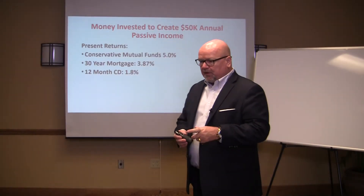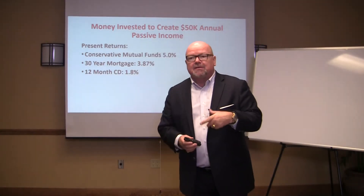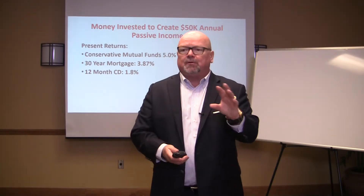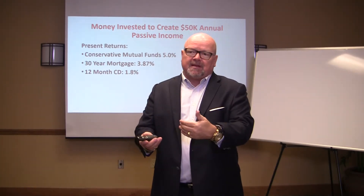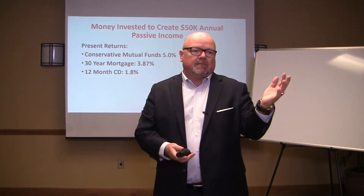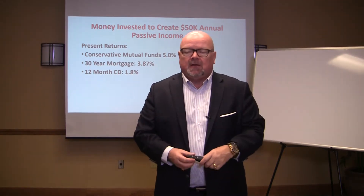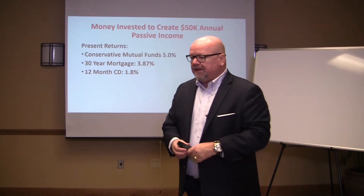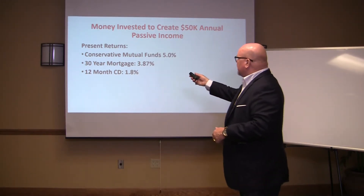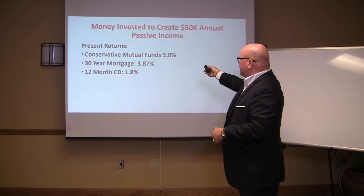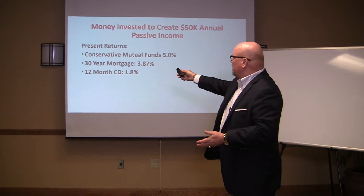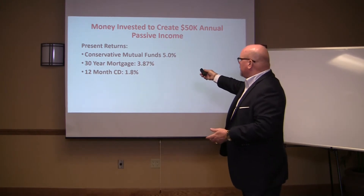This is the money invested to create $50,000 of annual passive income. Most people with $50,000 passive income would be able to pay for their mortgage, car, and fixed expenses. Now, conservative mutual funds at 5% — you can't even get 5% right now, it's about 2.5%, similar to a 30-year mortgage at 3.8% or a 12-month CD.